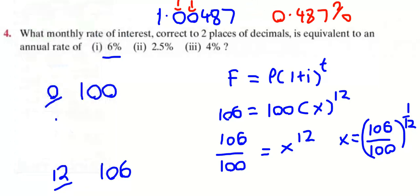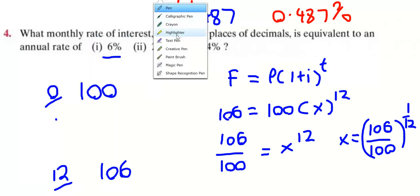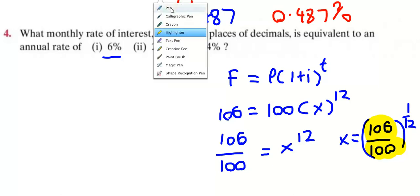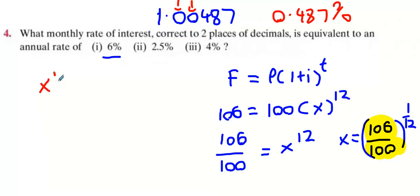Now there is a shortcut. You wouldn't know this, but remember I made up the number 100 and added 6 percent to get 106. Do you see this part here, 106 over 100? That's actually 1.06. So at the very beginning if you want the shortcut way of doing this, all you have to do is say x to the power of 12 is 1.06.